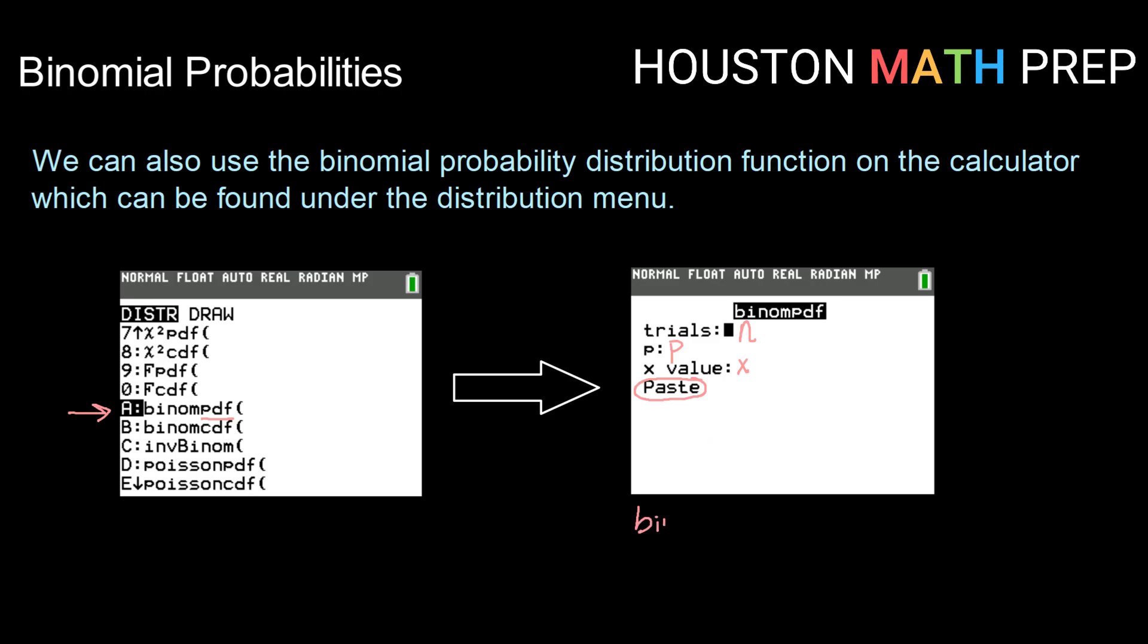If it just brings you to your home screen with binom pdf and an open parenthesis, simply type your values in order: n, comma, p, comma, x, then close parentheses and hit enter. Either way, it will give you that same value.